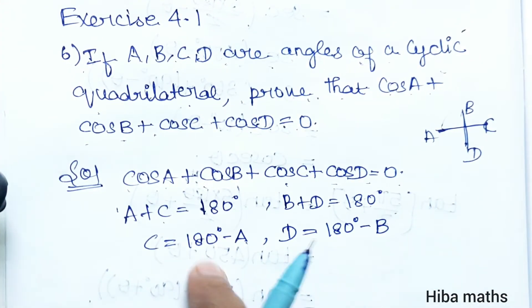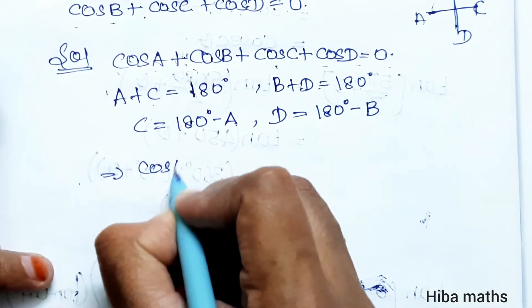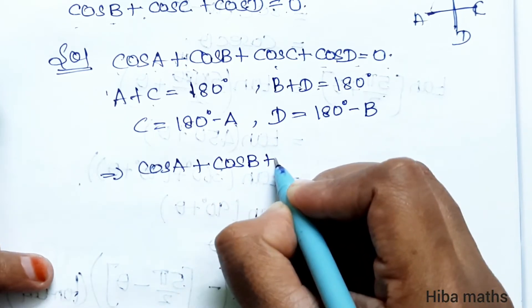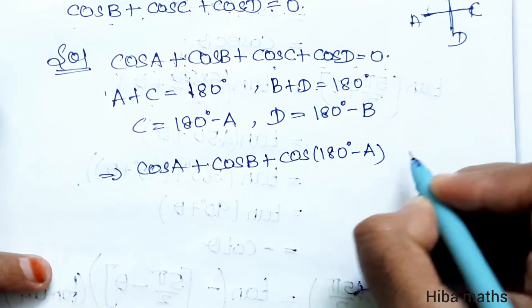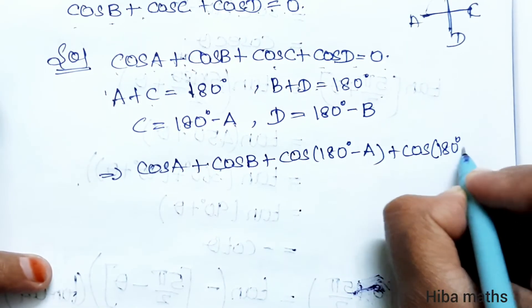Now C and D are about to be substituted. So cos A plus cos B plus cos of 180 degrees minus A plus cos of 180 degrees minus B.